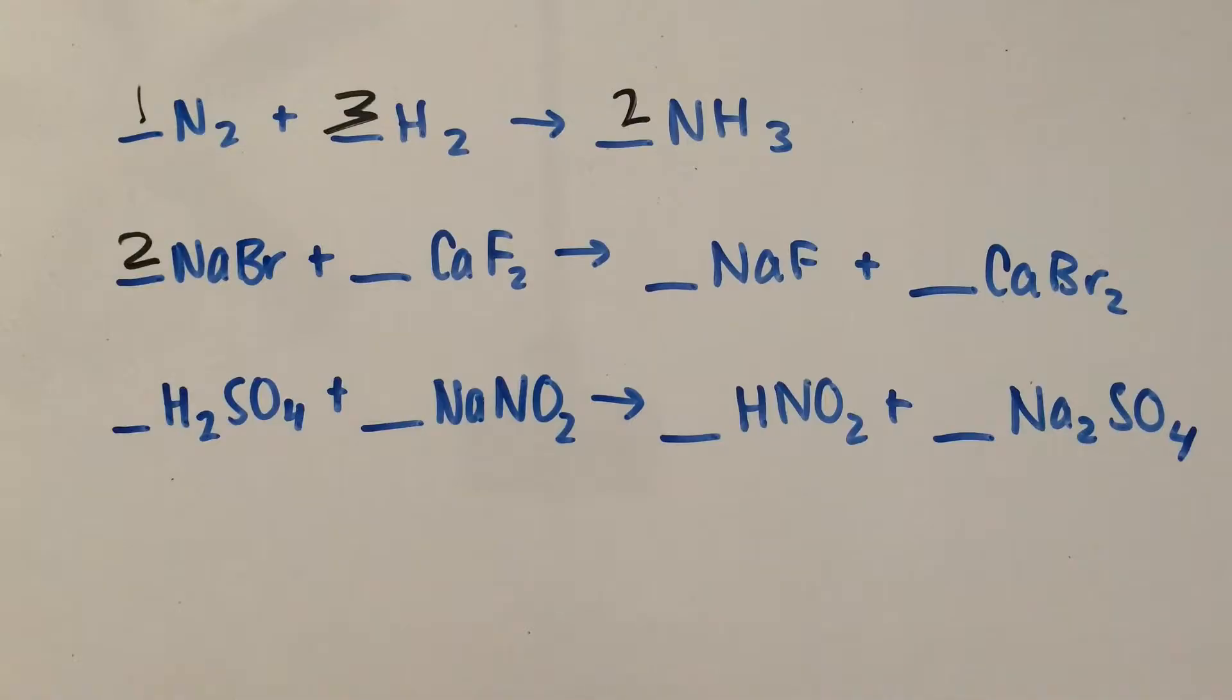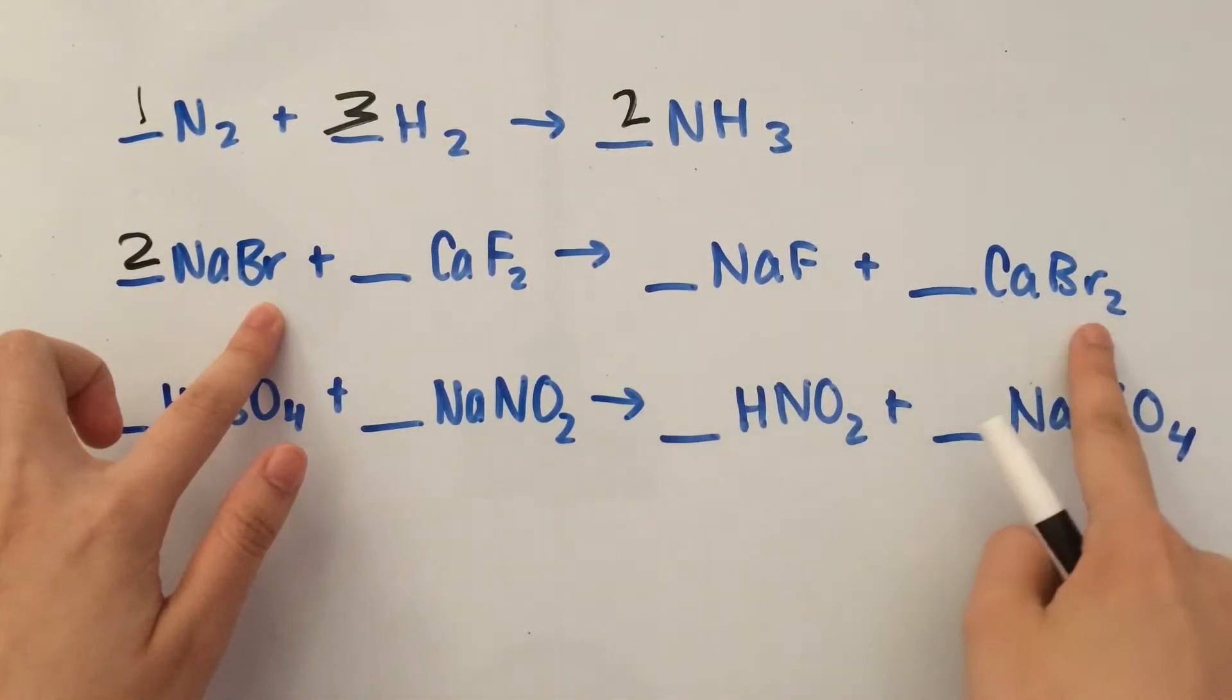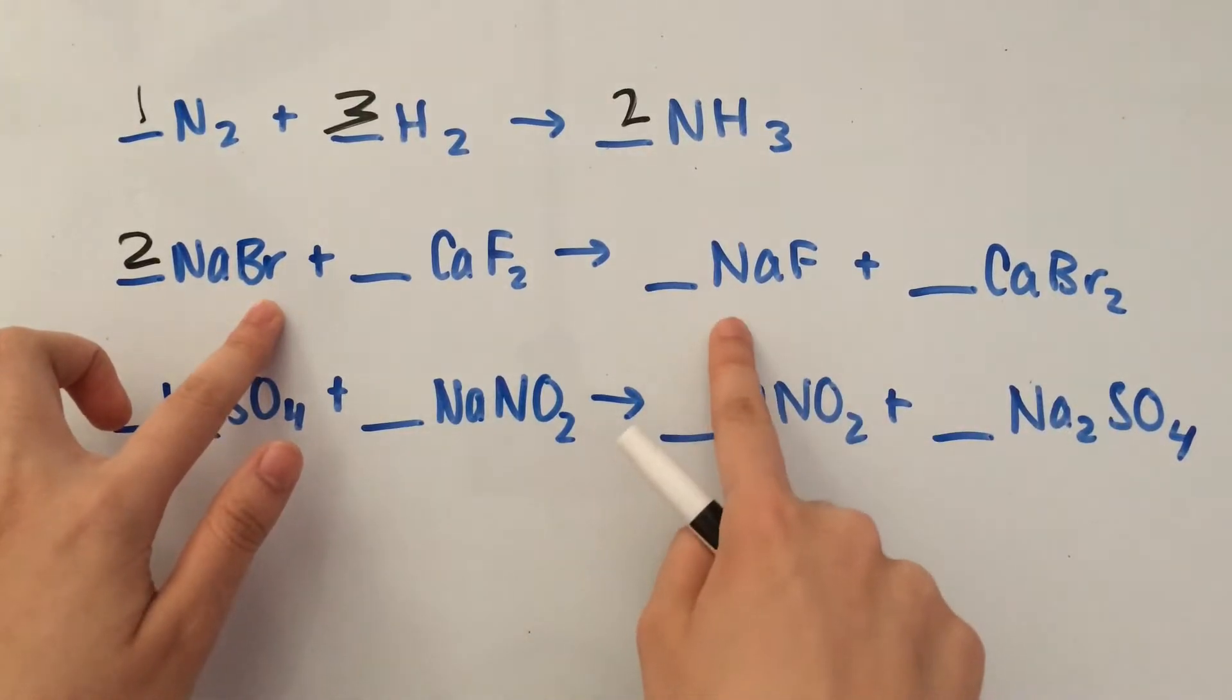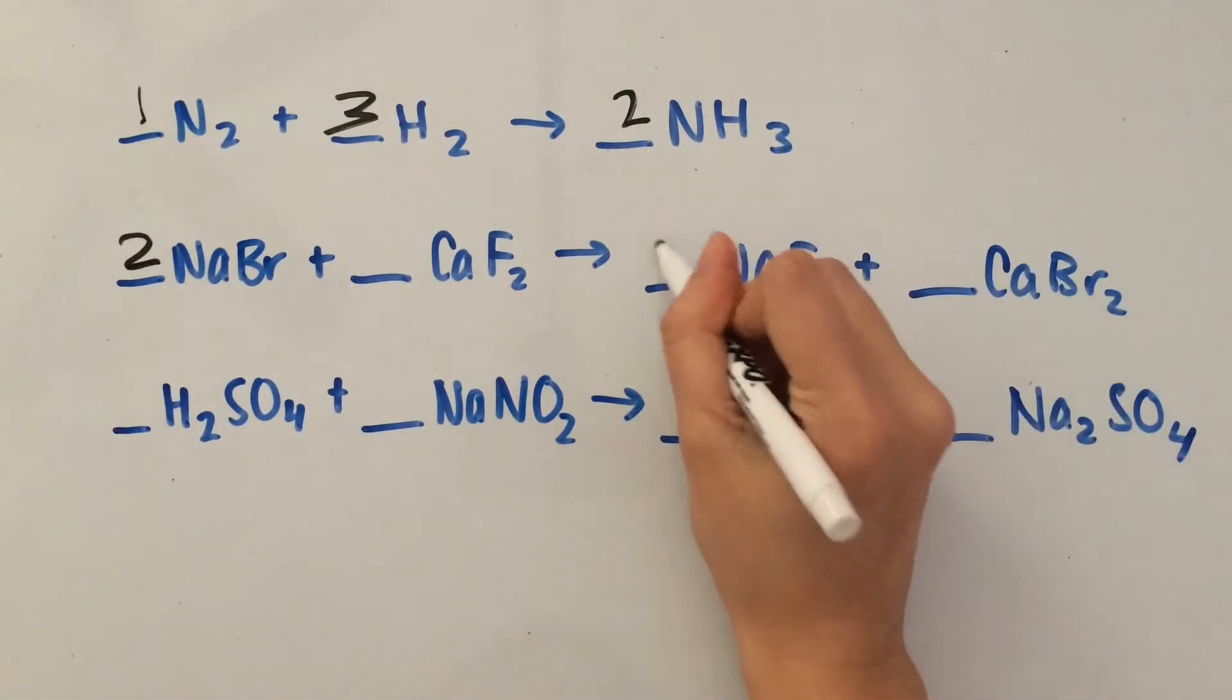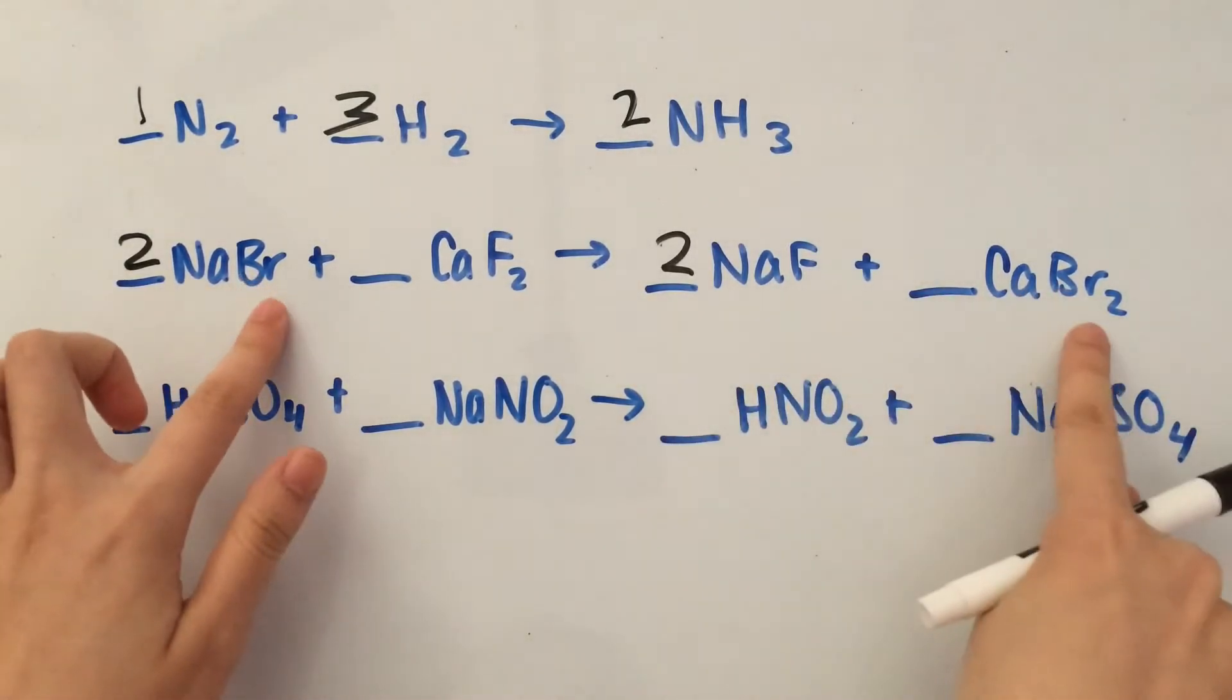Now we have two sodiums, one sodium, two Br's, two Br's. Since we only have one Na, we need to multiply that by two. So two of these, two of these.